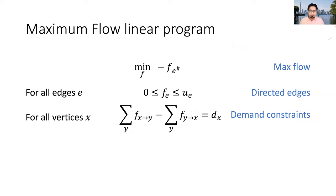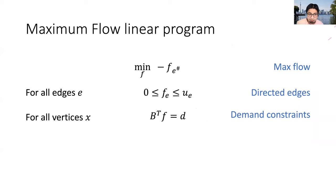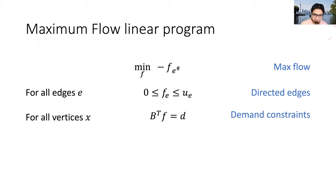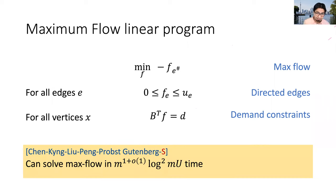Thinking of max flow as a linear program will be convenient for us. The demand constraints are compactly represented by the matrix B — the vertex incidence matrix — as B-transpose times the flow vector equals D, the net demand at every vertex, which you can think of as the all-zeros vector. We show that you can solve maximum flow exactly in almost linear time, with poly-logarithmic dependence on the capacities, giving an almost linear time algorithm for maximum flow.